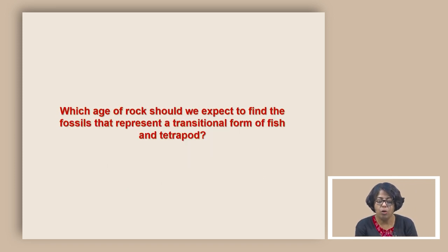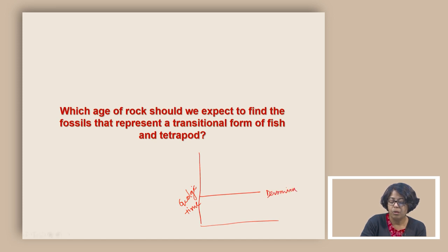Which age of rock should we expect to find the fossil that represents transition form of fish and tetrapod? We know if we look at the geologic time and where we find the fish record and where we find the tetrapod record, we know that around Devonian we started, and before Devonian also we have the fish record. Right after Devonian around Carboniferous, we started to find the tetrapod record.